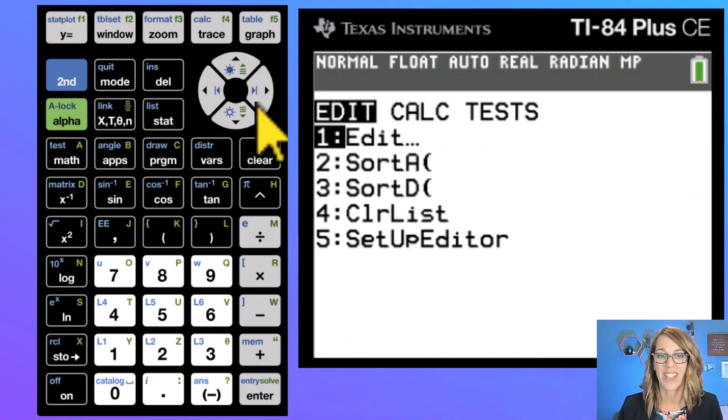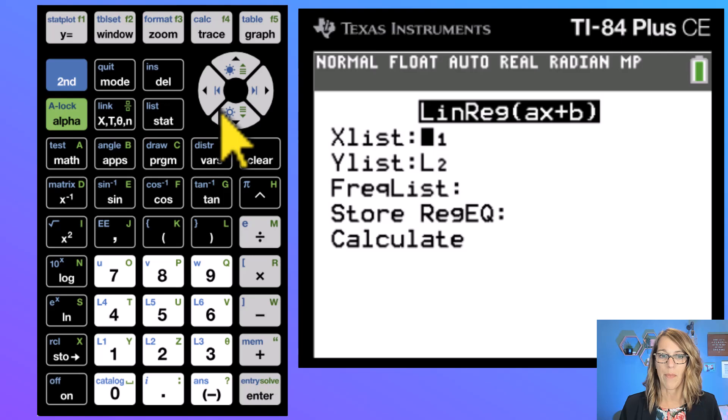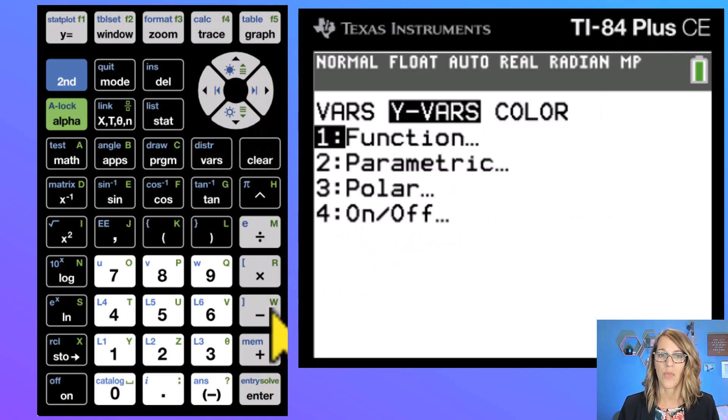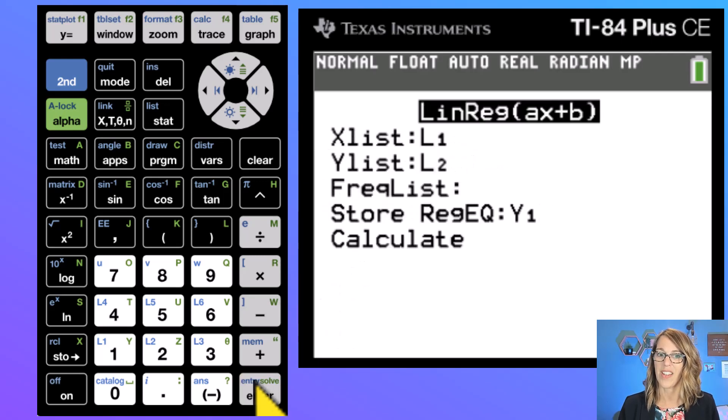Okay, so stat calc. I chose number four linear regression, enter. I've got my L1 and my L2 there. Let's just arrow through. I do want that regression equation stored. So go to my vars key, arrow over to y variables, hit enter once and then I do want y1. So enter again and now calculate.